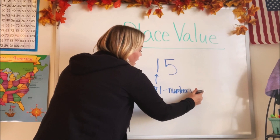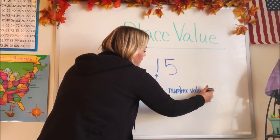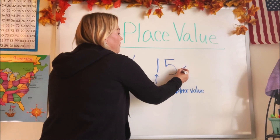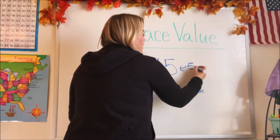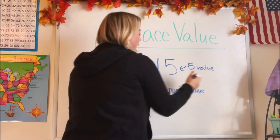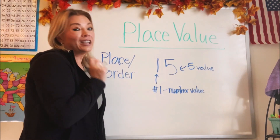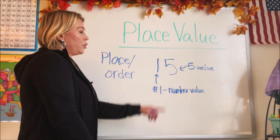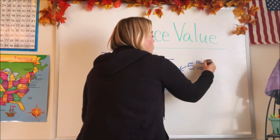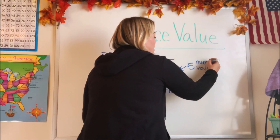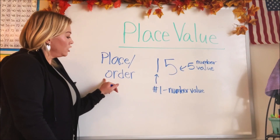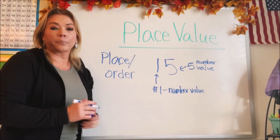And number five just means five — it's the five value. So we're not trying to figure out how much the numbers are worth, because we already know they're worth one and five. We're trying to figure out what the place value is, and the place value of a number has to do with the order of them. So let's talk about order for a minute.